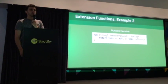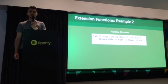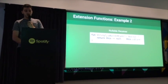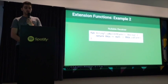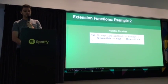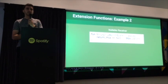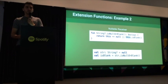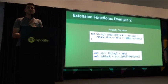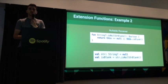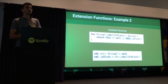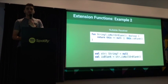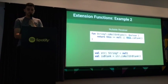The next extension example is called the nullable receiver. You can actually define an extension function on a nullable type itself and check for null inside the function. This means if we have a nullable string, we can call the method even though the string is null and it won't throw a null pointer exception — whereas in Java, there's really nothing you can do besides checking for null before using a method.